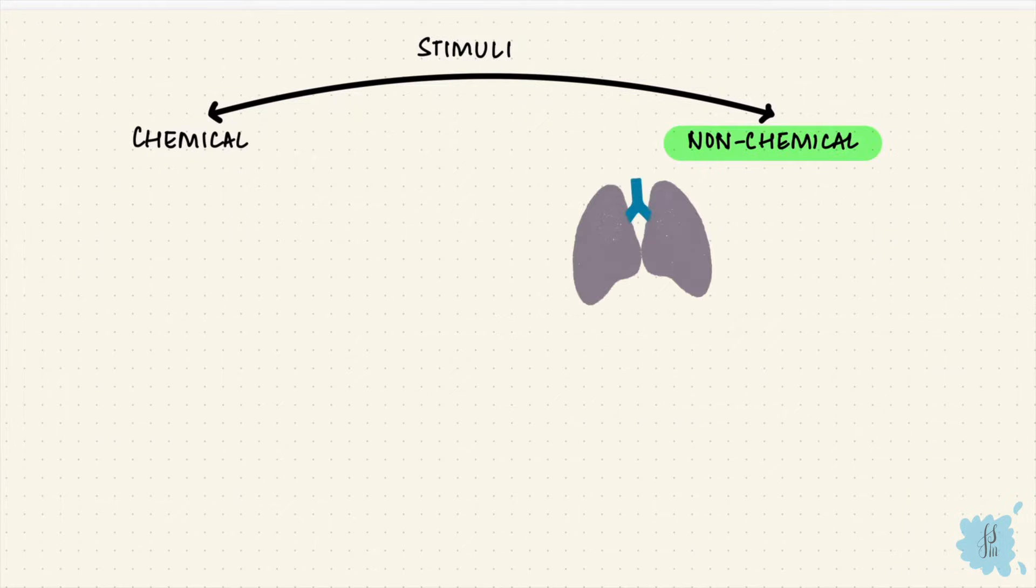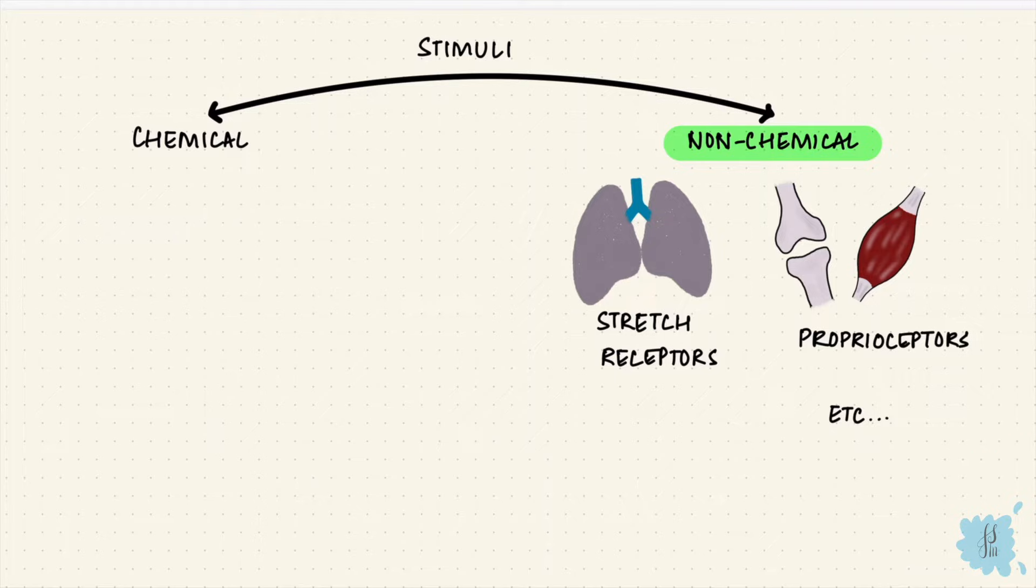These centers have to get their information from somewhere, and that's from receptors. Receptors pick up stimuli. There are chemical and non-chemical stimuli. Non-chemical stimuli are like when the lung stretches, picked up by stretch receptors, or proprioception, picked up by proprioceptors of the muscles and joints. But what we're looking at right now is the chemical stimuli, and what picks that up is a chemoreceptor.